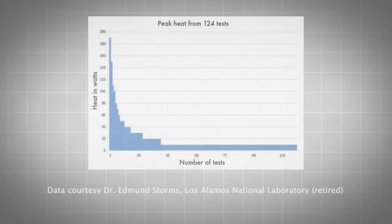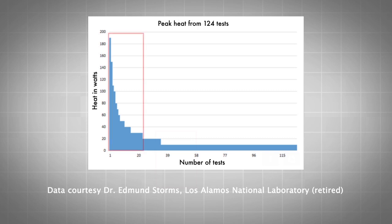Most cold fusion reactors produce low heat, less than a watt, but a few have been much hotter. Here are 124 tests from various laboratories, grouped from high power to low. Only a few produced high power. Most produced less than 20 watts.